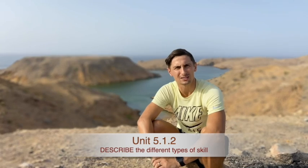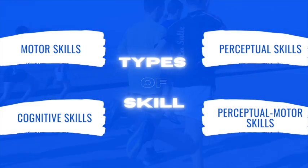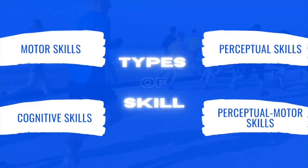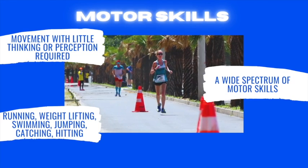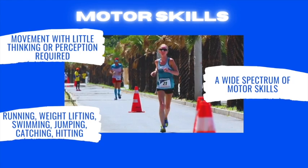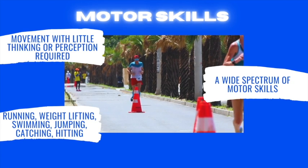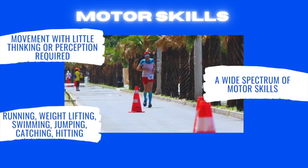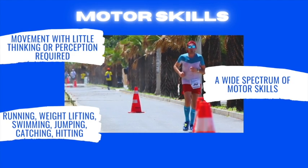5.1.2 is asking to describe the different types of skill. We've got four different types: motor skills, perceptual skills, cognitive skills, and perceptual motor skills. First, motor skills — movement with little thinking or perception required. Great examples include running, weightlifting, swimming, jumping, catching, hitting — loads of gross movements without any thinking behind the movement. There is a wide spectrum of motor skills, which we'll cover in 5.1.3 and 5.1.4.